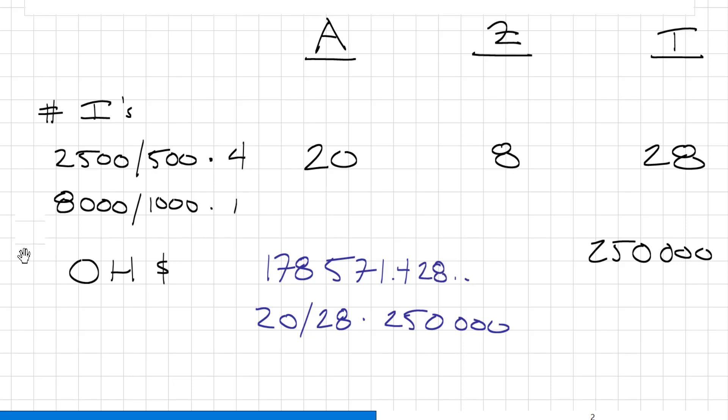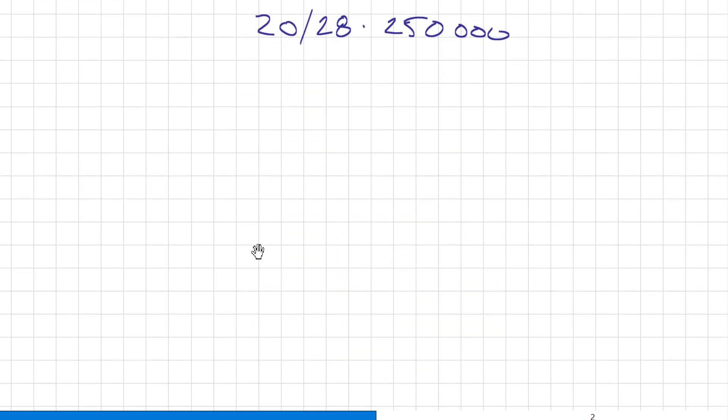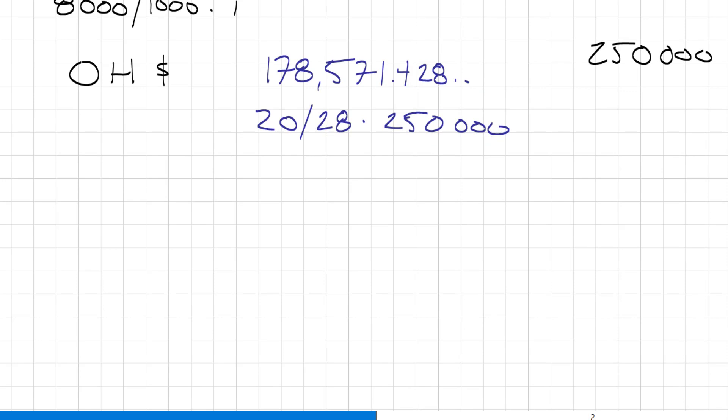Okay, I'll leave the decimal places in my calculator. Now we need to get to the unit level. We need to divide that number by 2,500. So 178,571.428 divided by 2,500 will equal 71.43. That's the answer that we are looking for. Inspection cost per unit.